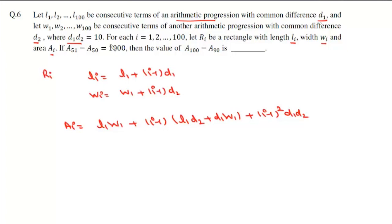Now we know that D1D2 is 10. So we can write this Ai as L1W1 plus i minus 1 into L1D2 plus D1W1 plus i minus 1 whole square into 10.